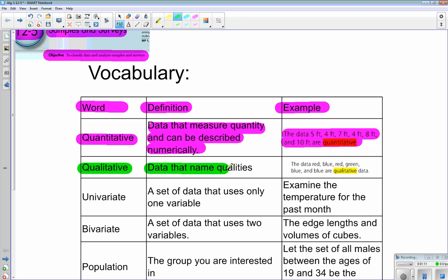That's when we collect data that names qualities like red, blue, green. Blue and blue are qualitative data.